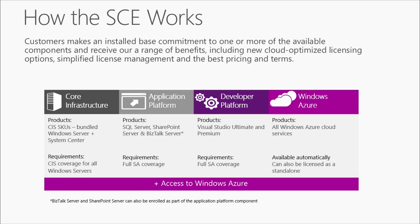To enroll in an SCE, an installed base-wide commitment is required to one or more of the four following SCE components: Core Infrastructure, Application Platform, Developer Platform, and Windows Azure. Choose any of these components individually or group them as needed. When choosing any of the first three components, Windows Azure at its best pricing is also available. This means committing to full Software Assurance coverage across the installed base of an SCE component. In the case of System Center, a commitment is required to full System Center coverage on the Windows Server installed base through the Core Infrastructure Suites. In return for making this commitment, the SCE offers a range of benefits, including new cloud-optimized licensing options, simplified licensing management, and the best pricing and terms.